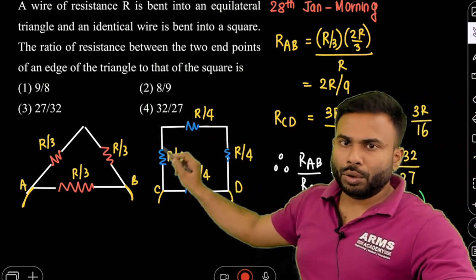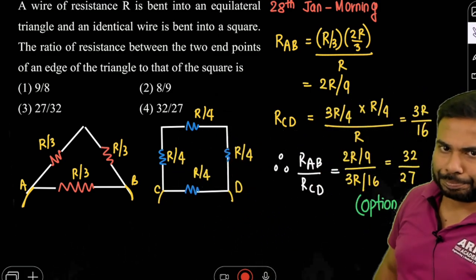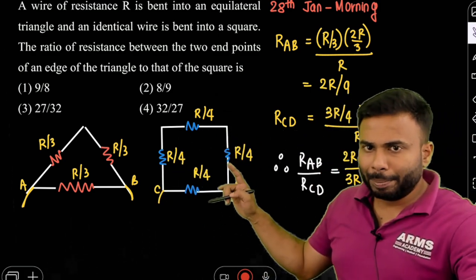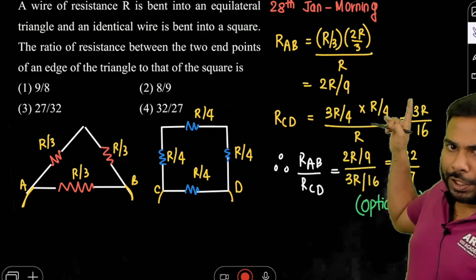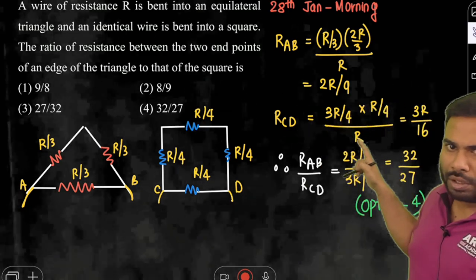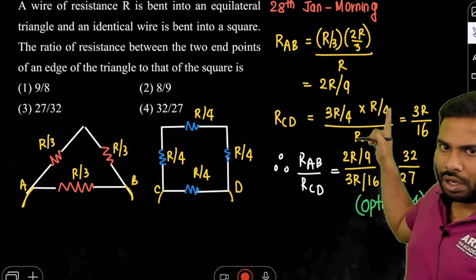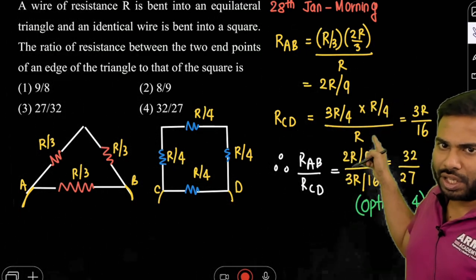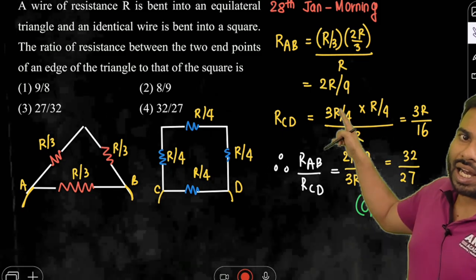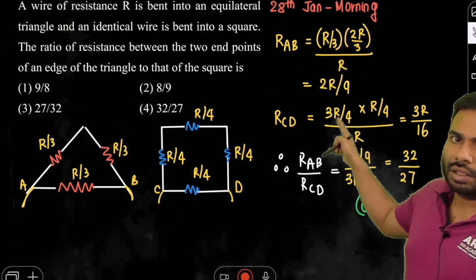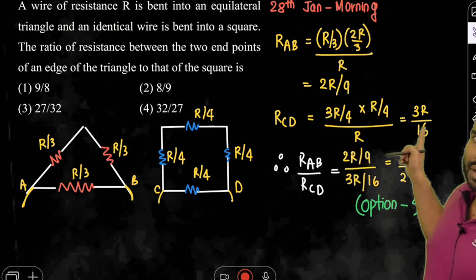Similarly, for the square, these three sides are the same, giving 3R/4. The parallel combination of 3R/4 and R/4, using R1 × R2 / (R1 + R2), gives 3R/4 plus R/4 in the denominator, which equals R. After cancellation, this results in 3R/16.